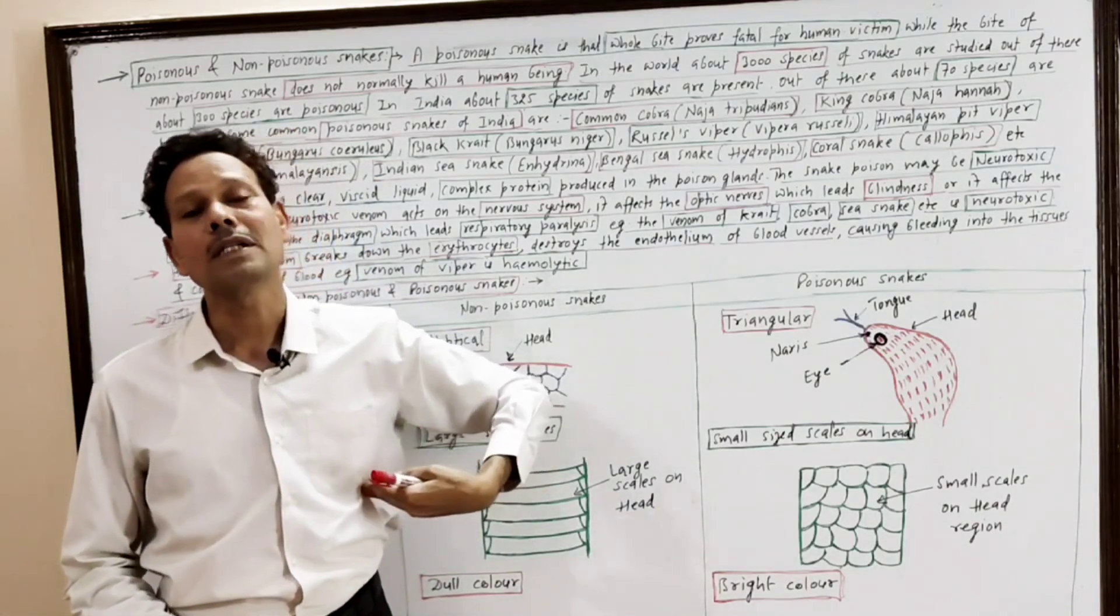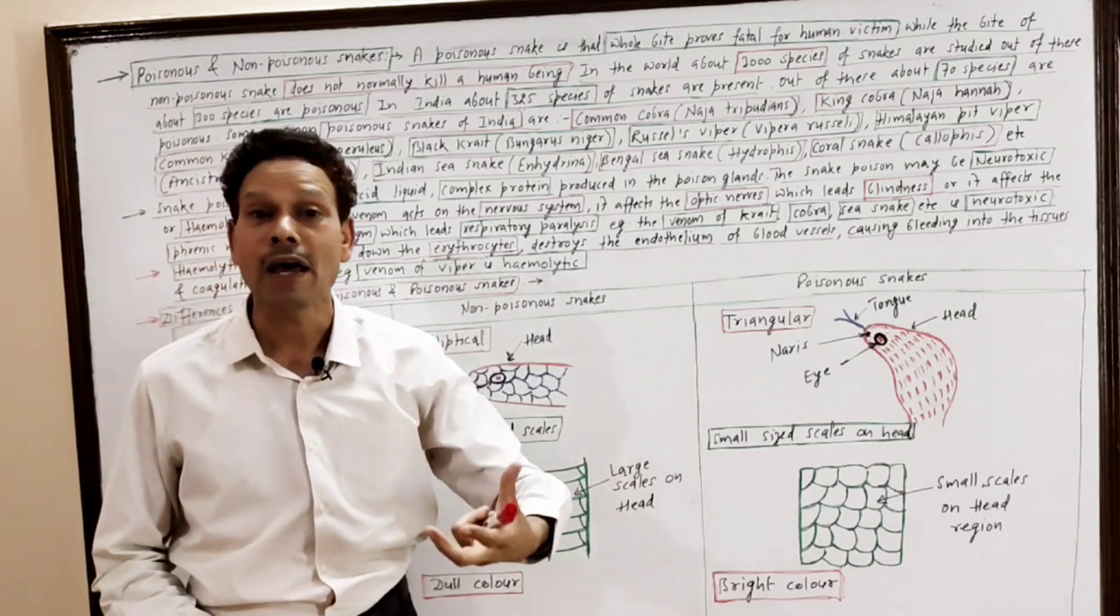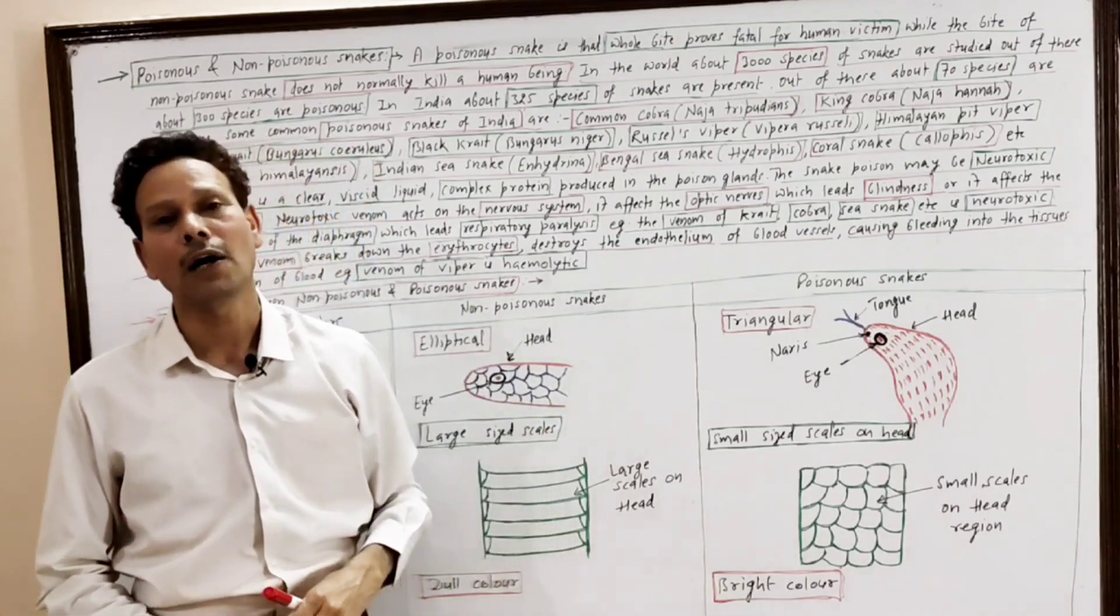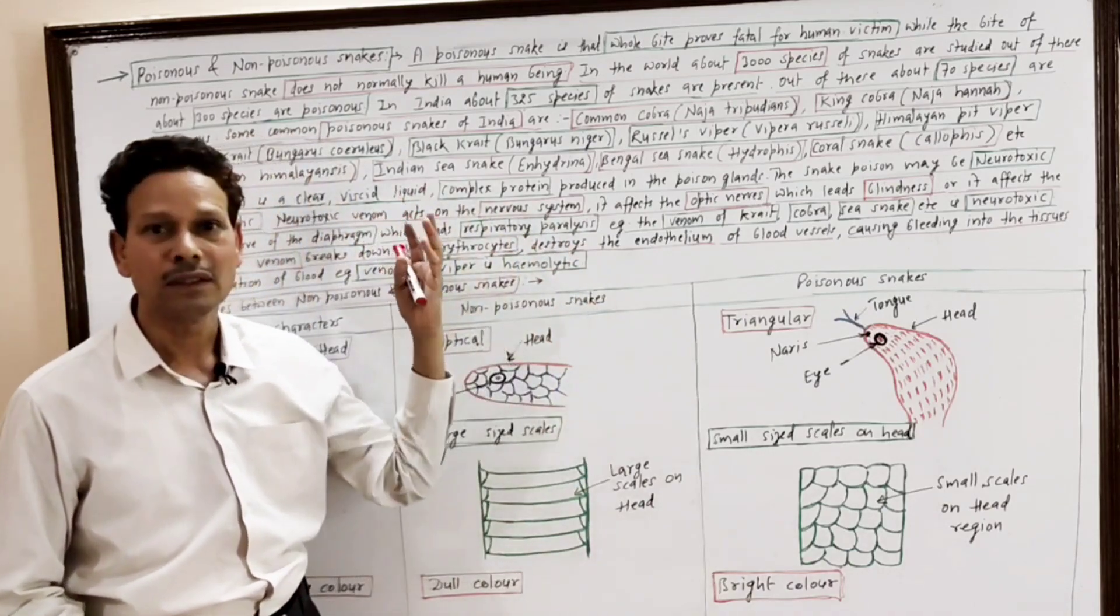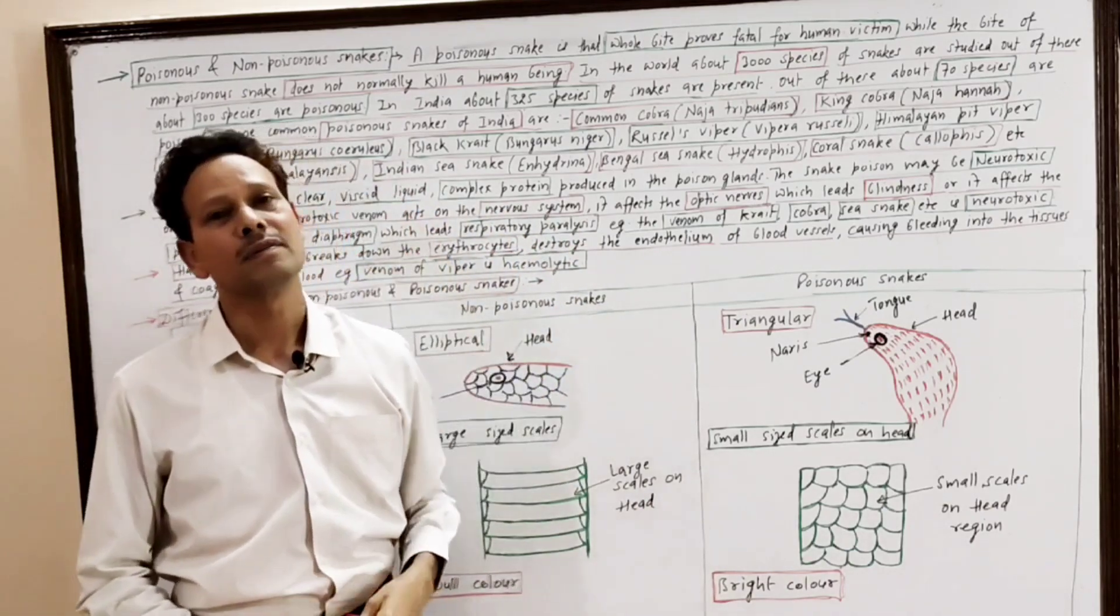The nerves of the diaphragm, the phrenic nerve, get destroyed. As a result, respiratory paralysis results.